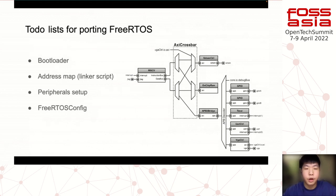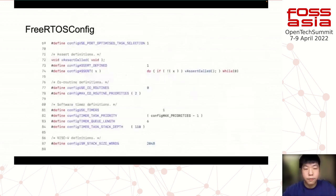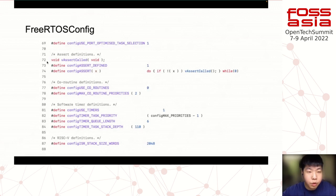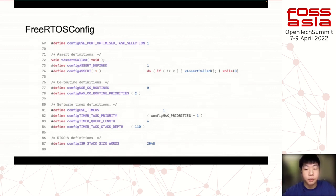The fourth part is the FreeRTOS configuration, similar to Kconfig in the Linux kernel. It allows enabling or disabling features by modifying a header file. I captured some contents from this header file: lines 72 to 74 enable the RISC-V support, and line 81 enables the timers. With this config file, we can enable and disable features without directly modifying the source code.